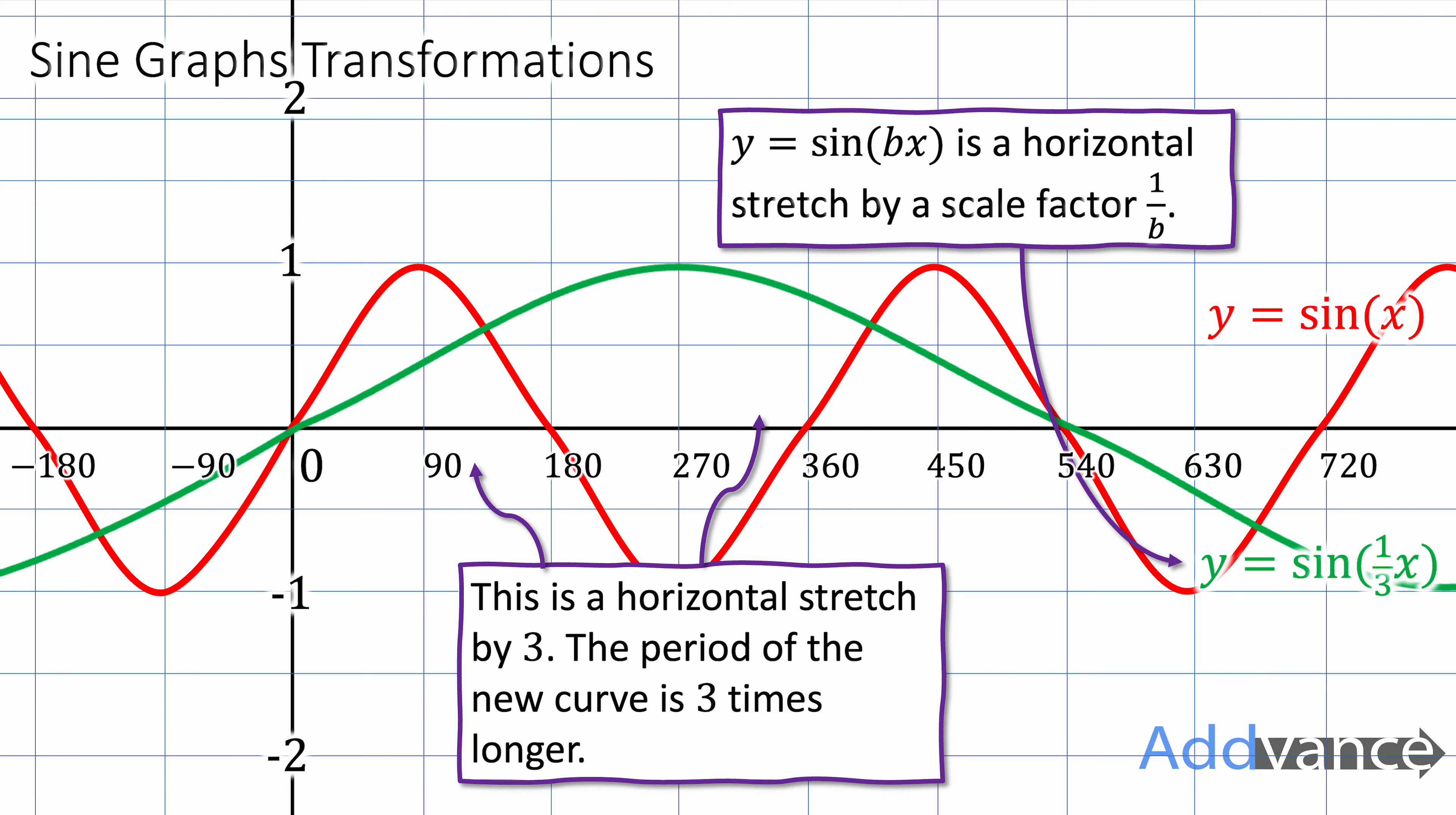The general rule is that if you've got y equals sin of bx it will be a horizontal stretch by a scale factor of 1 over b. So it's a bit tricky this one. So you've got y equals sin of a third of x, you flip the third upside down and it becomes 3 and that's where you get the scale factor from.